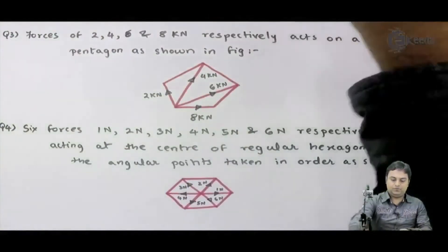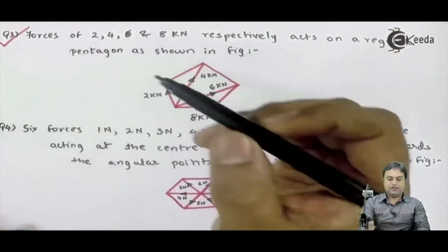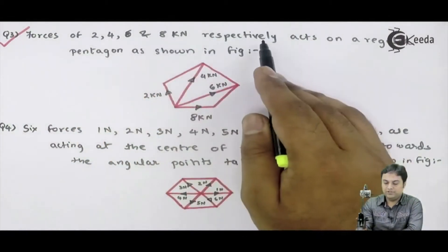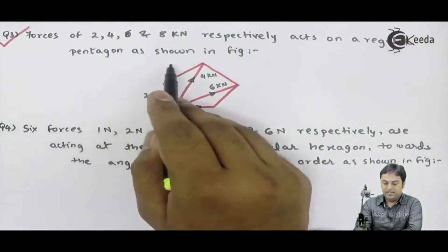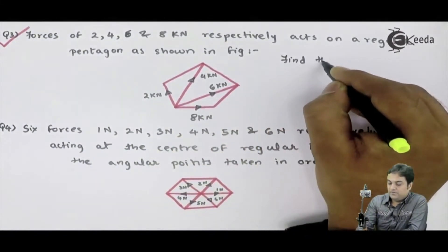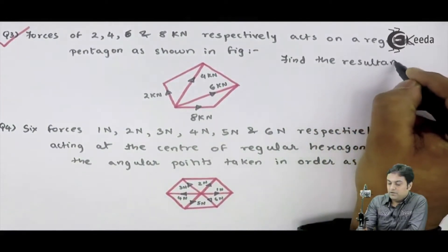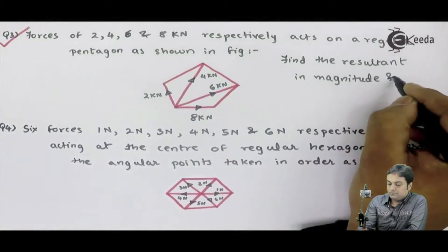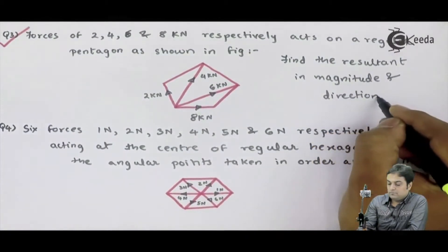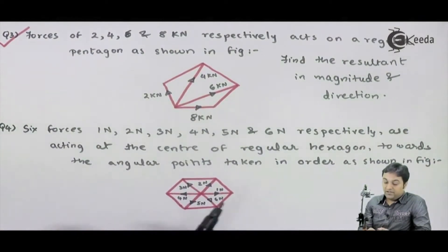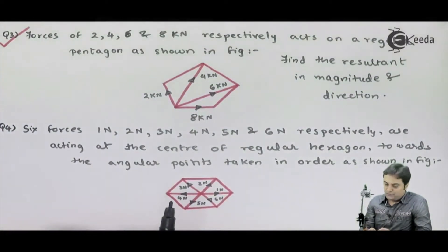Let us solve question number three. Forces of 2, 4, 6, and 8 kilo Newton respectively act on a regular pentagon as shown in figure. We have to find the resultant in magnitude and direction. This is the first problem in which we are seeing a regular pentagon, so now let us see how to solve this question.